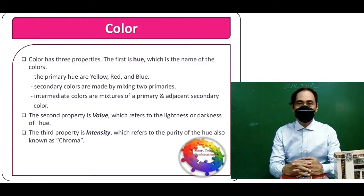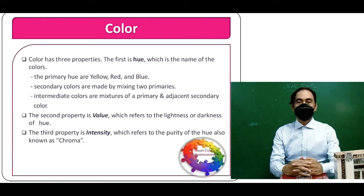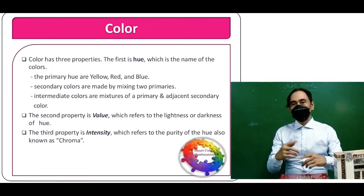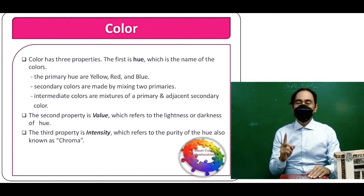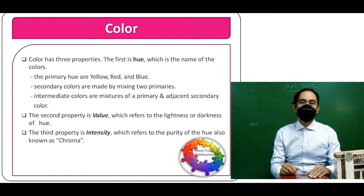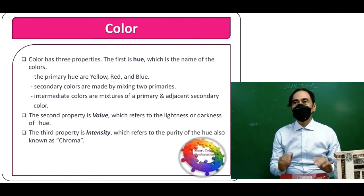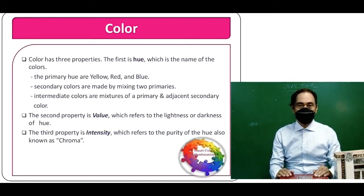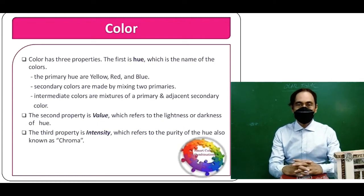Color has three properties. The first is hue, which is the name of the colors. The primary hues are yellow, red, and blue. The secondary colors are made by mixing two primaries. Intermediate colors are mixtures of a primary and adjacent secondary colors. The second property is value, which refers to the lightness or darkness of a hue.